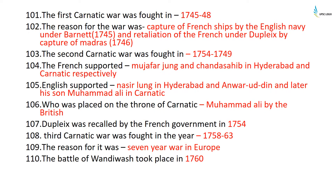The First Carnatic War was fought from 1745 to 1748. The reason for the war was the capture of French ships by the English Navy under Barnett in 1745 and retaliation by the French under Dupleix by the capture of Madras in 1746. The Second Carnatic War was fought from 1749 to 1754. The French supported Muzaffar Jung in Hyderabad and Chanda Sahib in Carnatic, while the English supported Nasir Jung in Hyderabad and Anwaruddin in Carnatic — and later his son Muhammad Ali, who was placed on the throne of Carnatic by the British. Dupleix was recalled by the French government in 1754.